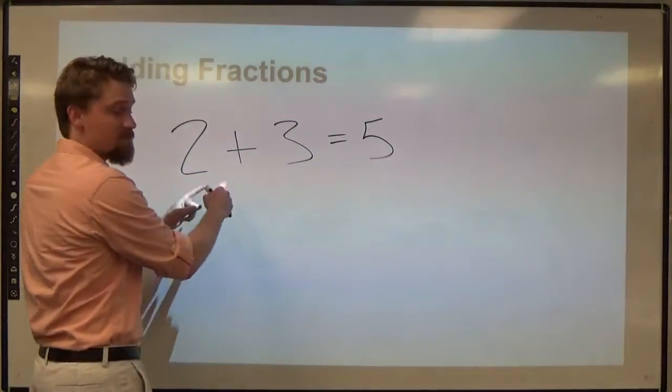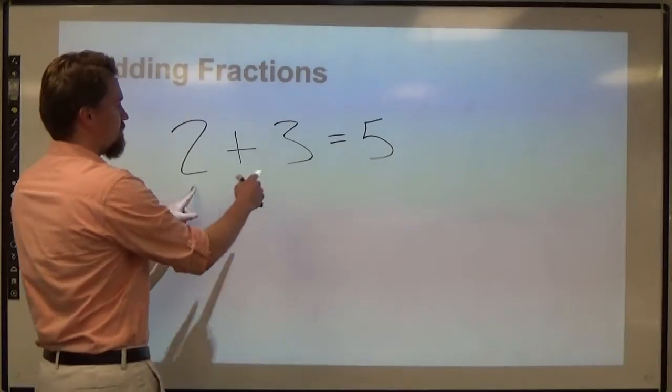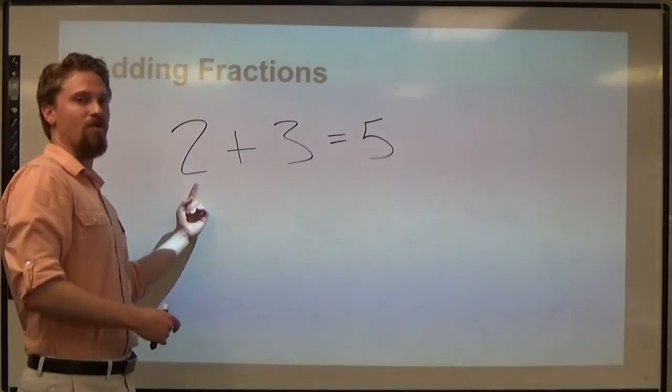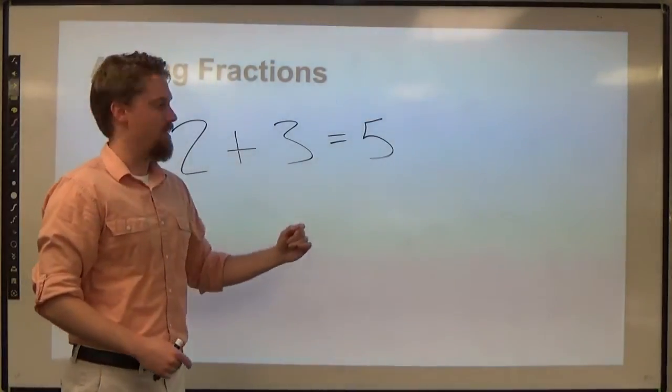We're referring to ones, which is a number smaller than the 2 and 3. We break it down into something smaller than the numbers present, and then we combine.